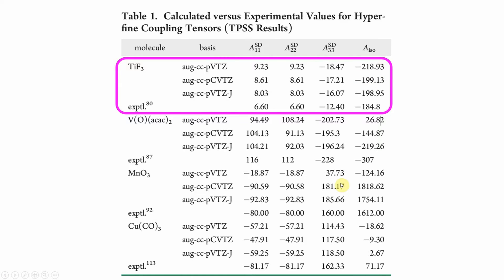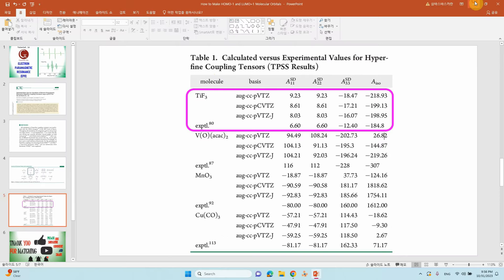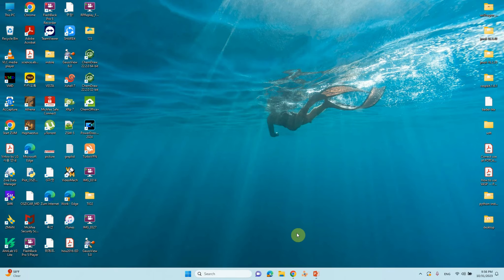This shows the calculated versus experimental values of hyperfine coupling tensors. They used the TPSS result. We are going to do this with B3LYP and we will also compare with our result.